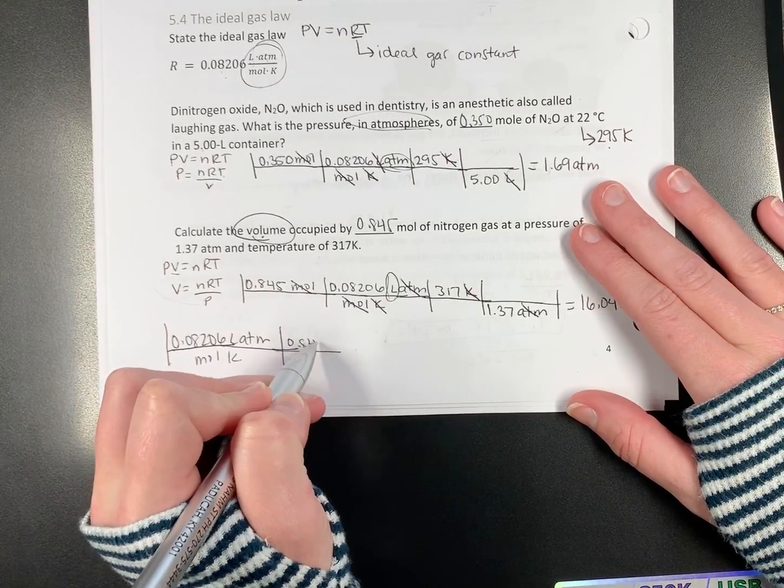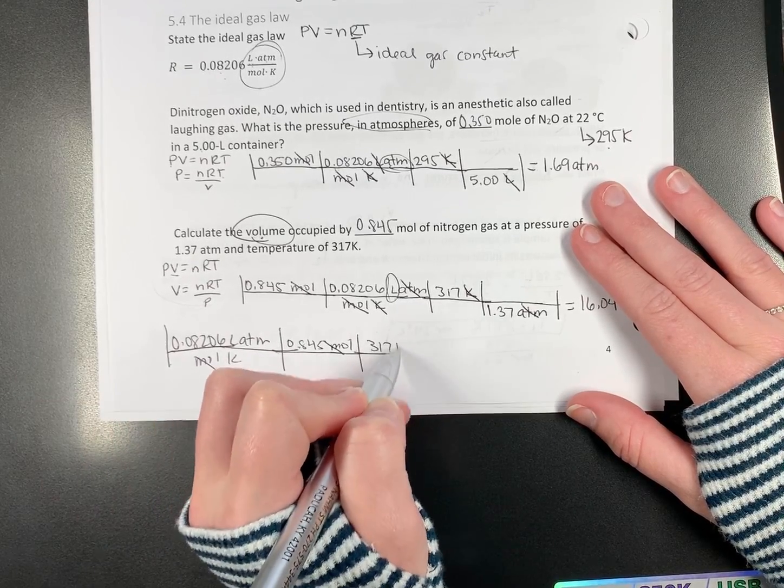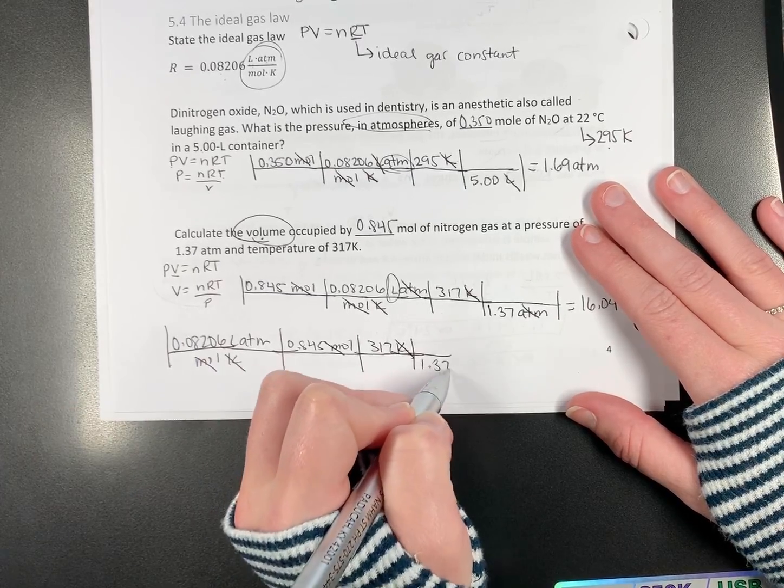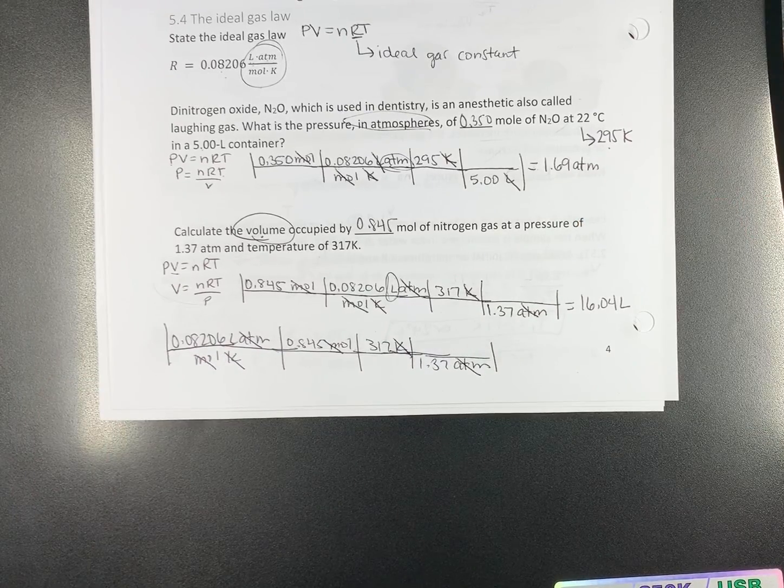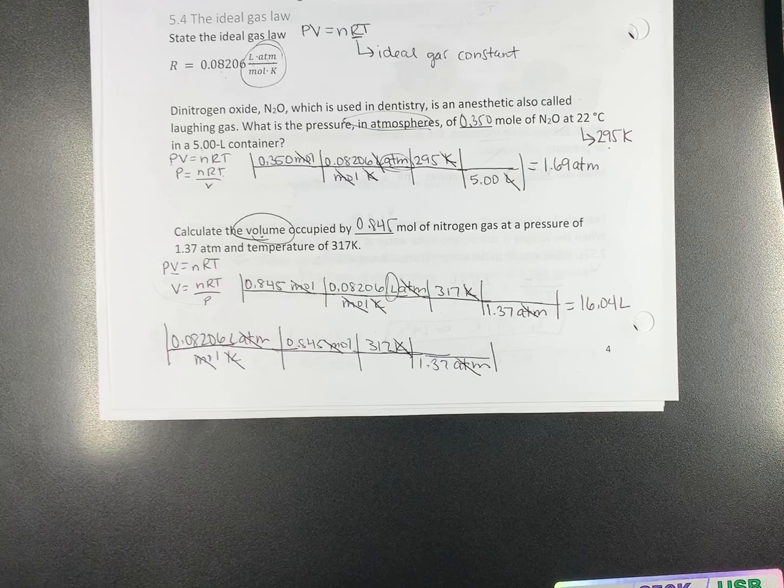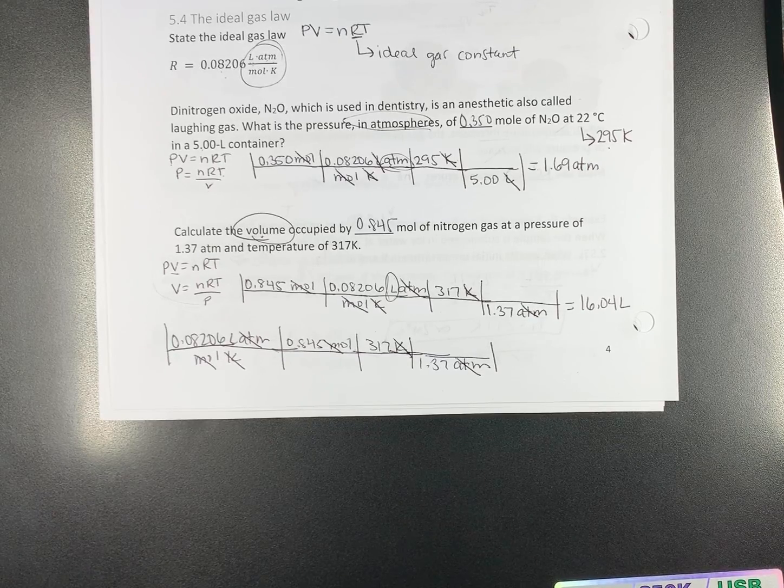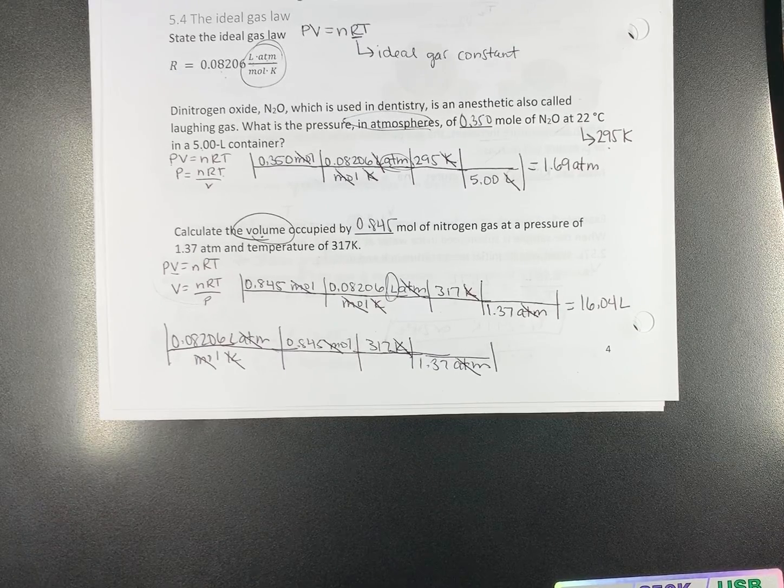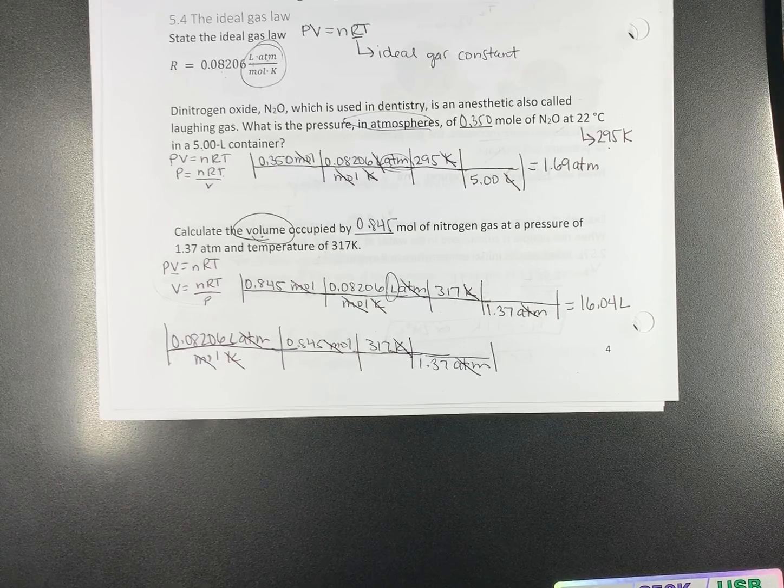So, moles, 0.845. This is how I know I don't get it upside down. Kelvin, 317 Kelvin. Atmospheres, 1.37 atmospheres. And then, I can convert as I go along. You get the same answer. But, I like to start with R. That's not how the book teaches you. Does anybody like using R first? That's more than I usually get. I'll work them your way most of the time.